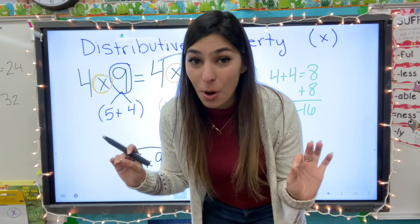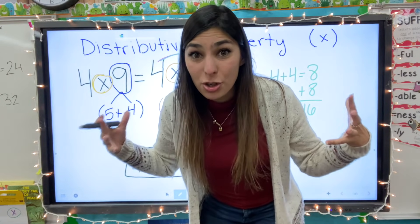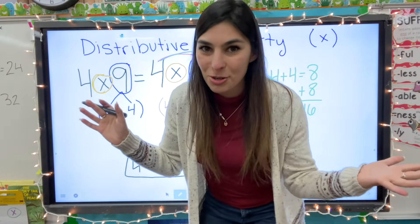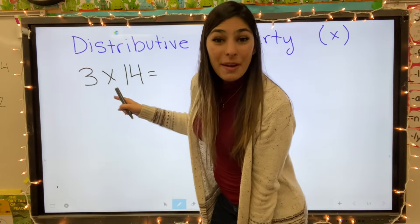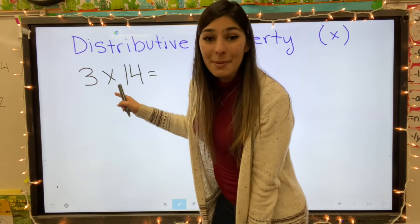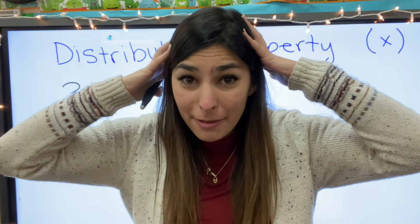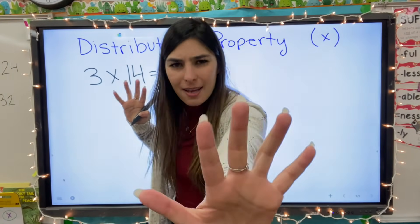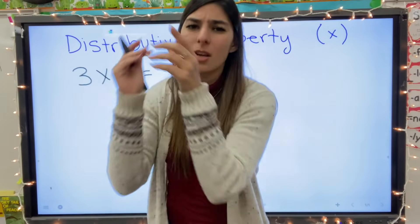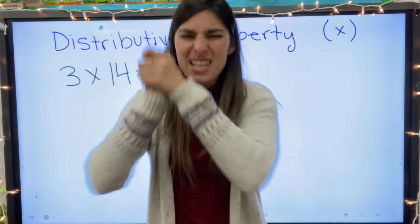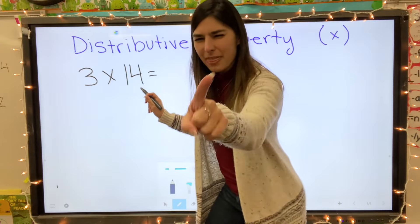Four times nine is kind of a smaller number — this next one is going to be a bigger number to show why it's so important to know distributive property. We have three times fourteen. I don't know how to multiply by fourteen, but that's okay, because the first thing we need to do is see that big number and split it up.